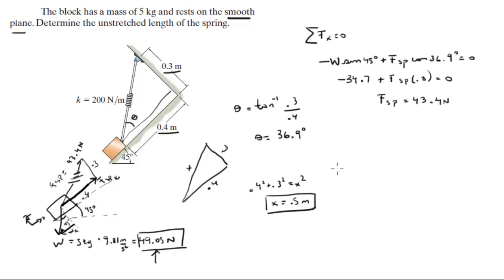Now that we have the force of the spring, you know that the force on the spring is equal to the constant, which is given, times the length minus the unstretched length. In other words, the initial length of the spring, which is what we're trying to find.